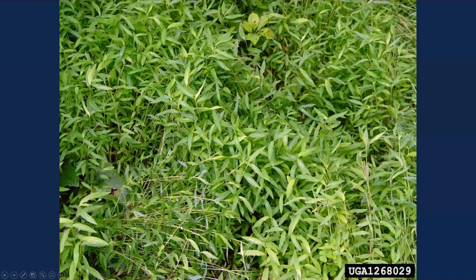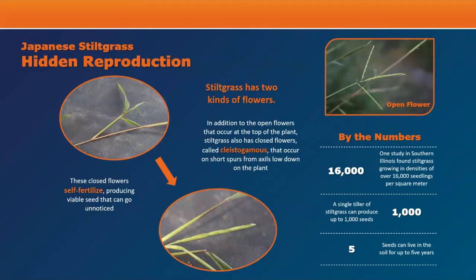It actually has aerial roots — that's where it gets its name stiltgrass — these 'stilted' roots that come from higher up on the plant and get into the ground. The plant also has an interesting reproductive strategy: it has open flowers on top, but if you dig down into the plant you find tiny little spurs — closed flowers that self-fertilize and produce fruit lower down in the plant earlier than the open flowers. Even in droughty years, stiltgrass often won't produce the big open flowers but will still produce these little closed flowers.